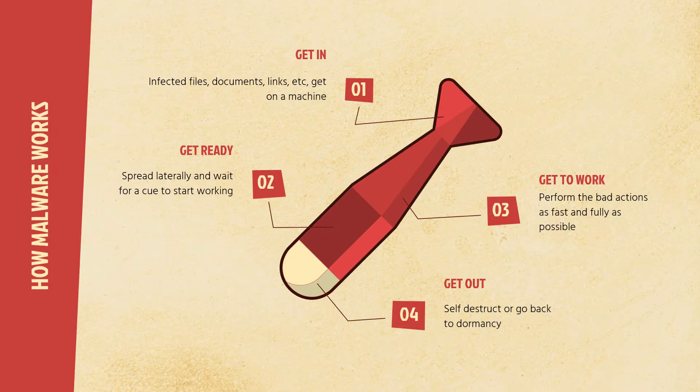So let's talk about how malware actually works. Malware is really a four-step process. First, it's going to get in — infecting files, document links, maybe getting into a process somehow onto your machine. Next, it gets ready: most of these things are programmed to spread laterally and wait for a cue to start working. Once they get that cue, it's time to get to work — the malware performs its bad actions as fast and as fully as possible. And then step four is get out, which is either self-destruct or go back to dormancy, hopefully before it's ever been detected, so the same thing could do its job a second time.